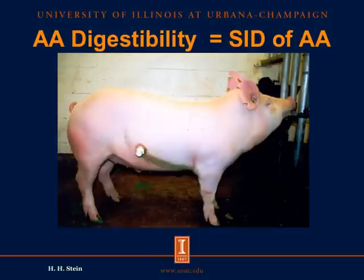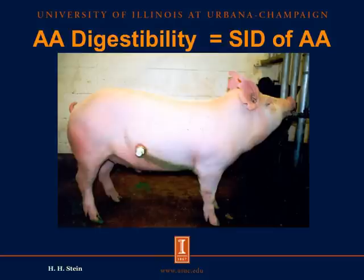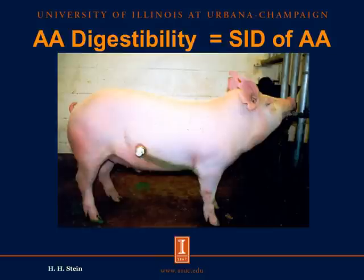We use this technique to calculate digestibility of different nutrients, and in particular amino acids. We have shown many times that the most accurate way of determining digestibility of amino acids in pigs is to determine the standardized ileal digestibility of amino acids. This requires access to ileal output of amino acids and determination of the basal endogenous losses. We calculate the apparent ileal digestibility, correct for basal endogenous losses, and thereby calculate the standardized ileal digestibility, which is the most accurate procedure for determining amino acid digestibility in feed ingredients.